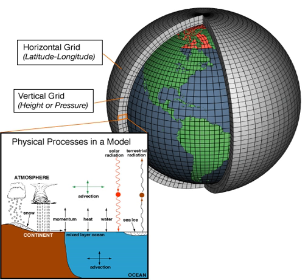A general circulation model is a type of climate model. It employs a mathematical model of the general circulation of a planetary atmosphere or ocean, using the Navier-Stokes equations on a rotating sphere with thermodynamic terms for various energy sources. These equations are the basis for computer programs used to simulate the Earth's atmosphere or oceans. Atmospheric and oceanic GCMs are key components along with sea ice and land surface components, and are used for weather forecasting, understanding the climate, and forecasting climate change.